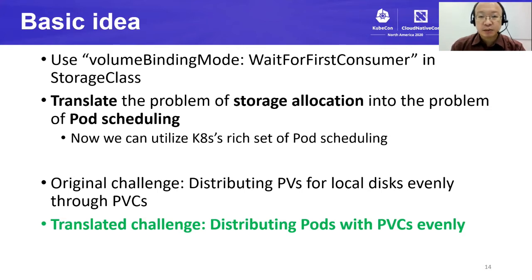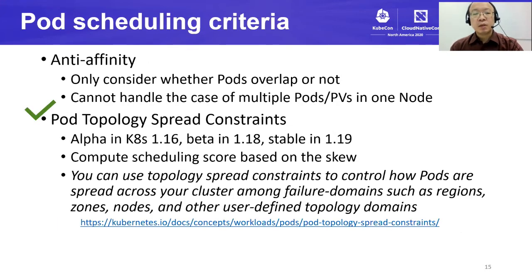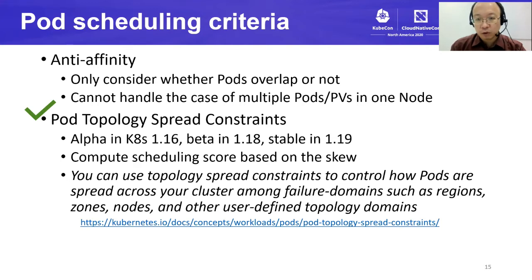Going back to our basic idea: by specifying wait-for-first-consumer for the volume binding mode, we can translate the problem of storage allocation into the problem of pod scheduling, and Kubernetes provides a rich set of features we can utilize. Our challenge is now translated to distributing pods with PVCs evenly. Which scheduling criteria should we use? One candidate is anti-affinity — we can distribute one pod per node using anti-affinity, but we want to use multiple PVs on one node. Anti-affinity doesn't distinguish whether there are two, three, four, or more pods. A much more appropriate criterion is pod topology spread constraints. This feature was introduced in Kubernetes 1.16, became better in 1.18, and is now stable in 1.19.